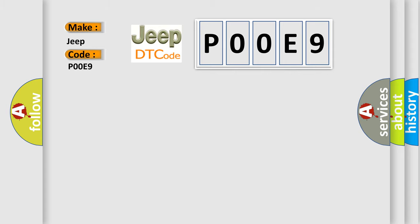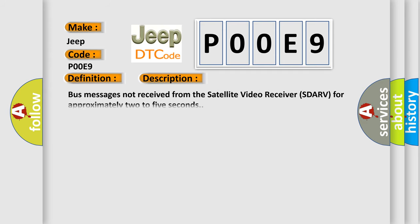The basic definition is Lost Communication with Satellite Video Receiver SDARV. And now this is a short description of this DTC code. Bus messages not received from the satellite video receiver SDARV for approximately 2 to 5 seconds.